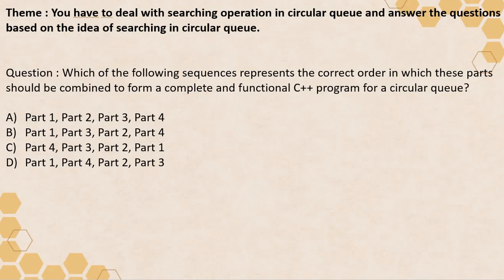We are going to talk about searching operation in circular queue. Circular queue itself is a data structure which is difficult to understand. Here you can see I am asking you a question: which of the following sequences represents the correct order in which the parts should be combined to form a complete and functional C++ program for a circular queue? There are four parts in the options, and they are jumbled. You have to identify the correct order of execution.